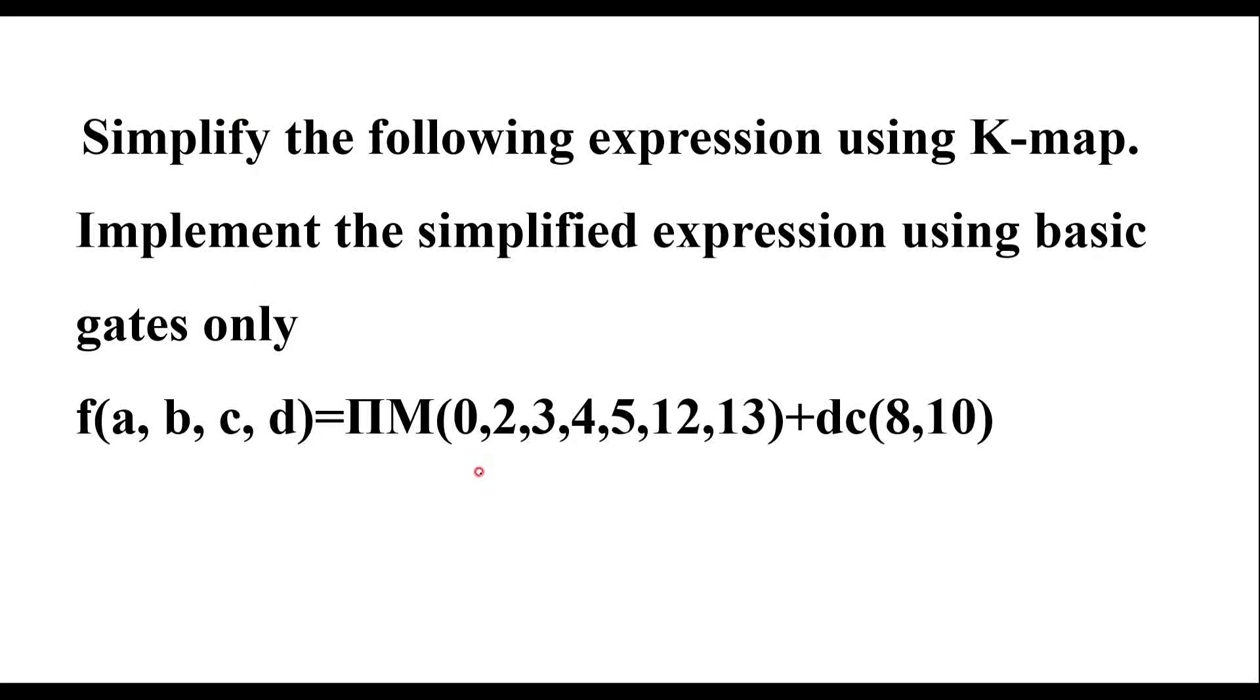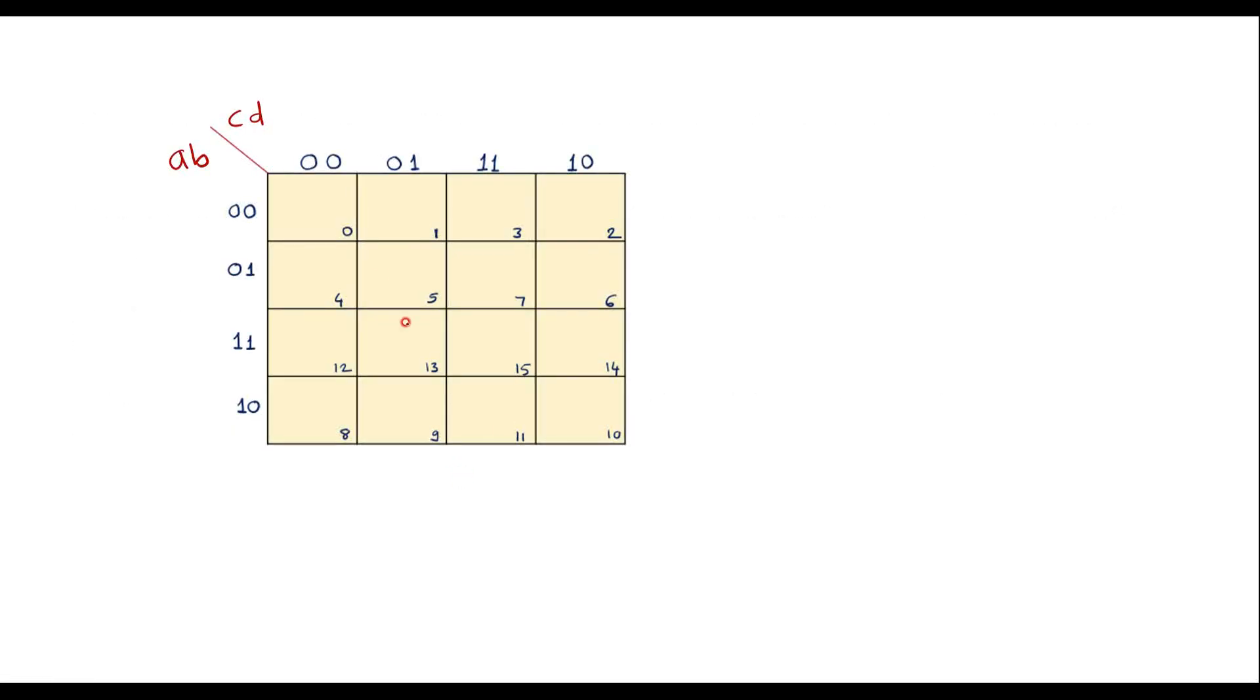So pi M indicates it is a max term. So in max term 0, 0 corresponds to c plus d. This corresponds to c plus d bar. This is c bar plus d bar and this will be c bar plus d.